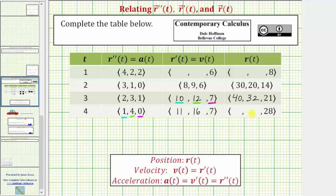And now let's find the position vector at t equals four seconds. Over this one second time period, the velocity in the x direction is 11 meters per second, in the y direction is 16 meters per second, and in the z direction is seven meters per second. The starting position is the position at t equals three seconds, which is 40 meters in the x direction, 32 meters in the y direction, and 21 meters in the z direction. The x position starts at 40 meters; for the next second the velocity is 11 meters per second, which increases the x position by 11. 40 plus 11 is 51. At t equals four seconds, the x position is 51 meters.